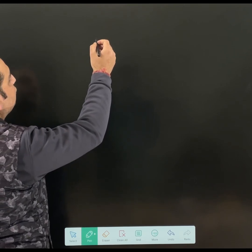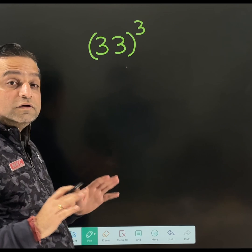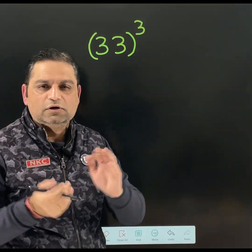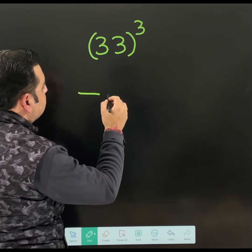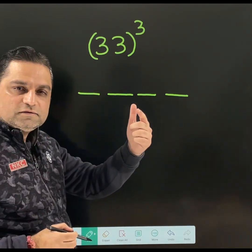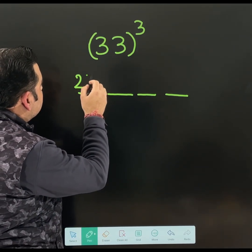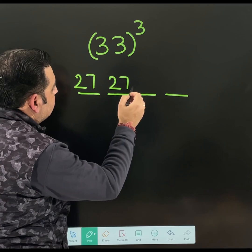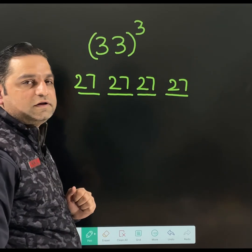After 22 cube, let us suppose you want to do 33 cube. Rule is already explained. I am not going to change the rule now. As told earlier, make 4 spaces. 3 cube is 27. Write 27 at every space. 27, 27 and 27.